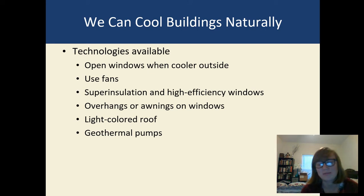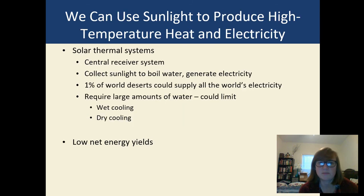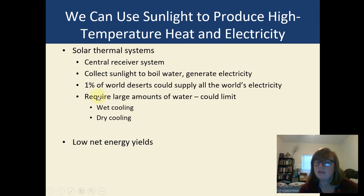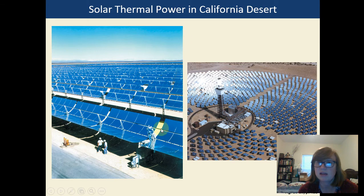You can cool buildings naturally — open a window, use a fan, use high-efficiency windows, an awning for shade, or a light-colored roof. We can also use sunlight to make high-temperature heat — even in Buffalo in winter, a solar panel can collect sunlight, boil water, and generate electricity. One percent of the world's deserts could supply all of the world's electricity — that's how much sunlight energy hits places like the Sahara. However, you'd need large amounts of water to cool the equipment, resulting in low net energy output. Here's a solar power plant in California.